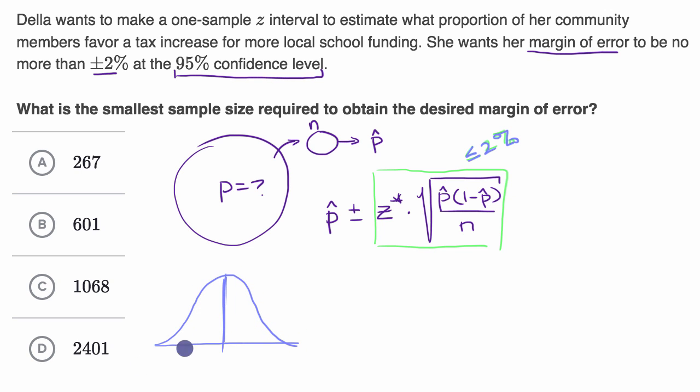This would be 2.5% that is unshaded at the top, and 2.5% here. We could look up in a z-table. You wouldn't look up 95%, you would look up the percentage that would leave 2.5% unshaded at the top, so you would actually look up 97.5%.